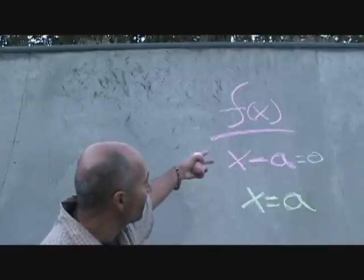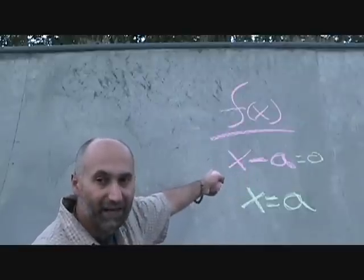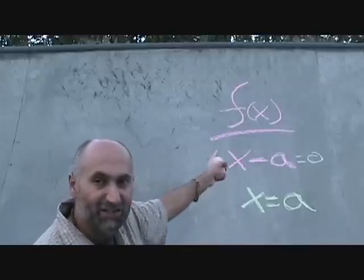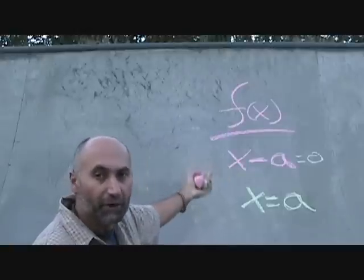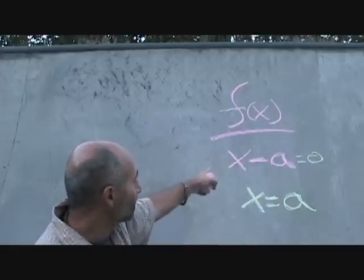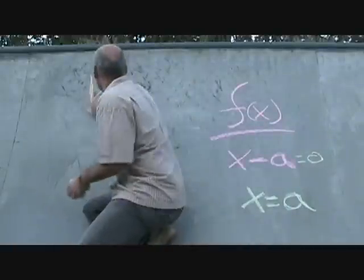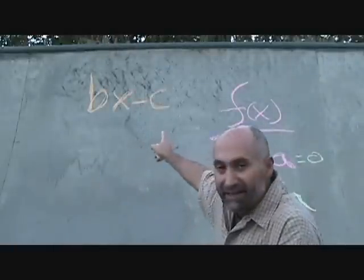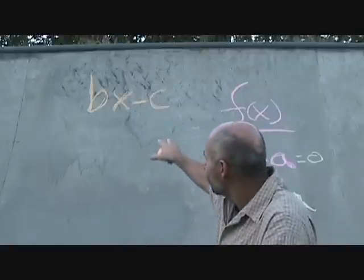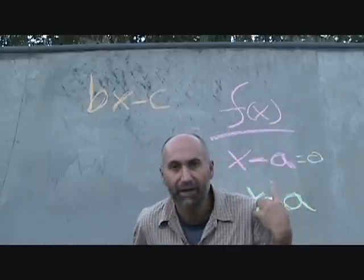One thing to be careful of: most of the time when we do this it's going to be x minus a, where the coefficient in front of the x is just one. However, you can do synthetic division where the coefficient in front of the x is not one — it could be two, three, or any other number. So we can do synthetic division for expressions where we have bx minus c in the denominator, but there's a trick to it. All you do is set that equal to zero, bring the c over, divide by b, and your a becomes a fraction.